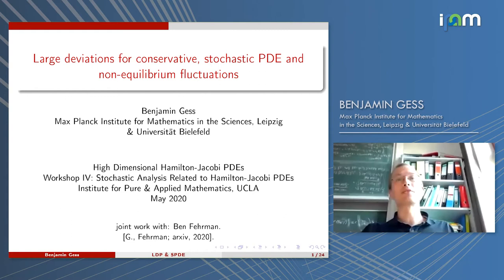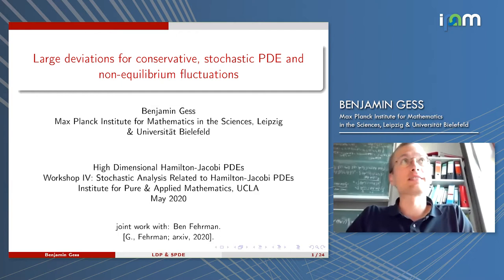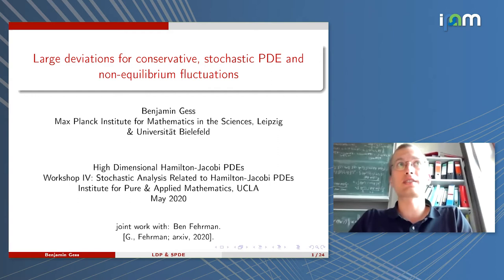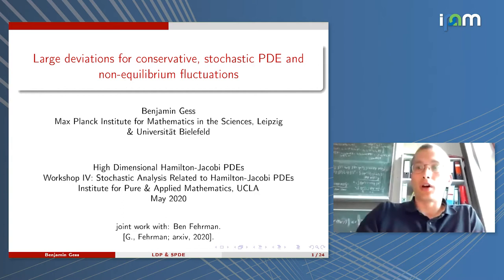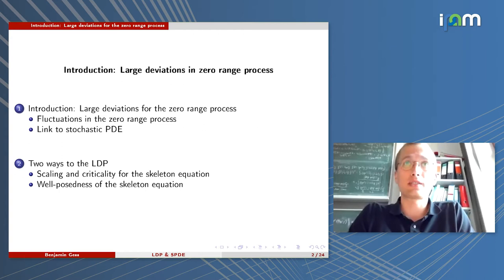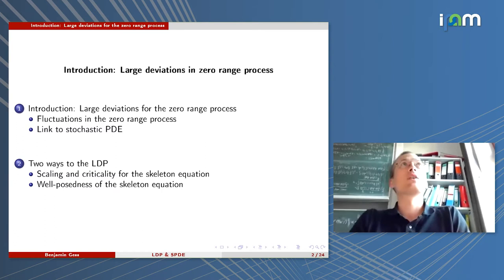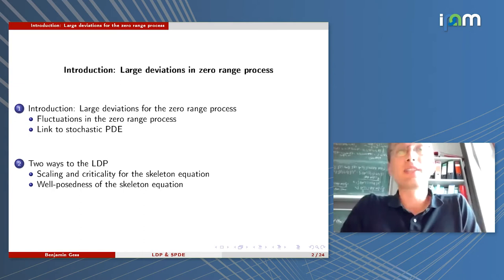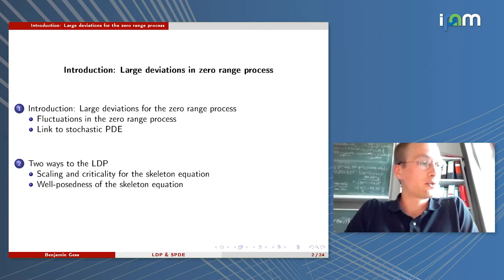Today I'm speaking about work joint with Ben Fairman, who is a postdoc in Oxford. There is also a lot of surrounding work joined with Taki Suganidis, and ongoing work with Nicholas Dier. The plan of my talk is to spend quite a bit of time on the motivation of the class of stochastic partial differential equations I'm suggesting to consider here, given that we have a broad audience and many of you may not have a background in stochastic PDEs. This will also explain the link of this talk to the concept of this workshop.